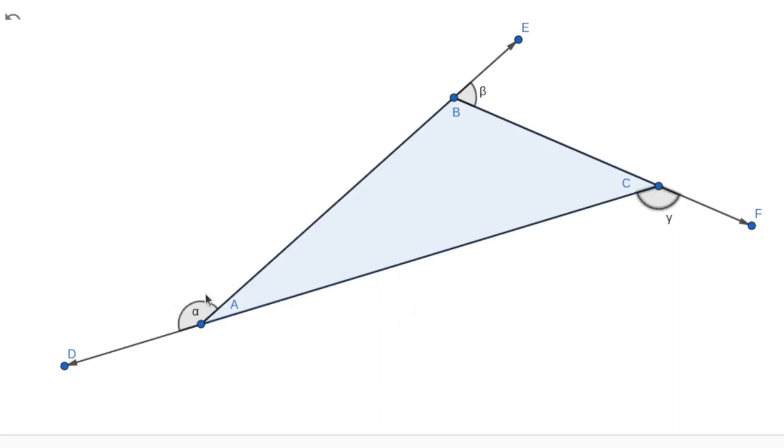Notice that in each case, alpha plus A is 180 degrees, beta plus B is 180 degrees, and gamma plus C is 180 degrees. And notice that I have turned around 360 degrees because I started looking in this direction, then I turned and looked in this direction, then I turned and looked in this direction, and finally I turned back so I was looking in the same direction I began at, always making right-hand turns.